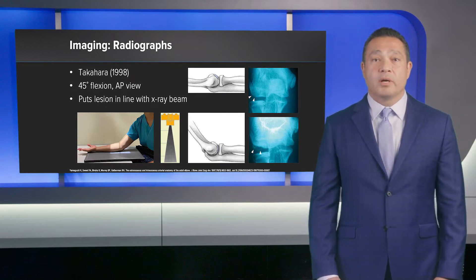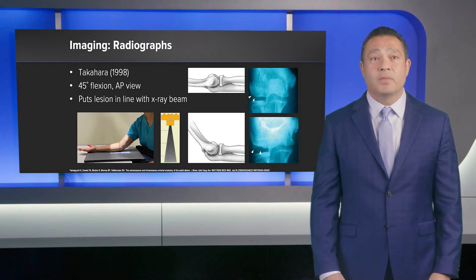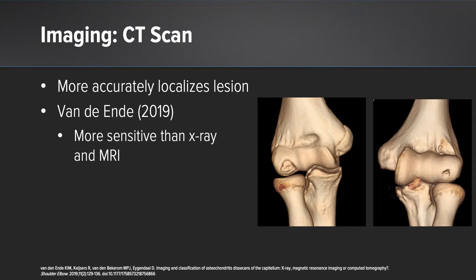Radiographs are an important part in not only diagnosing but also classifying OCD lesions. Takahara has taught us about the 45-degree flexion AP view, which puts the lesion more in line with the beam of the x-ray and increases the sensitivity of plain radiographs. CTs have been proposed to be used; it is more accurate in localizing the lesions, and in one study it was more sensitive than x-ray and MRI.